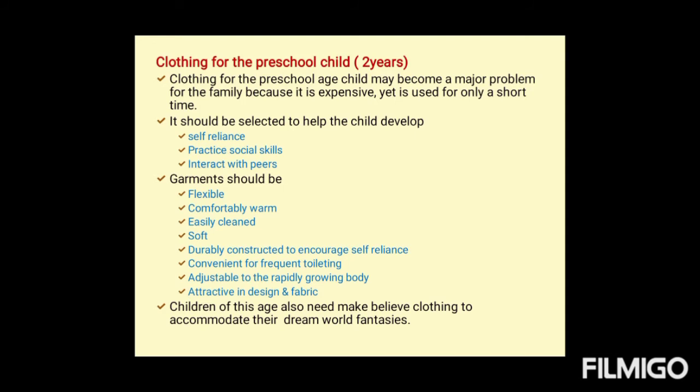Clothing for preschool children (2 to 6 years): clothing for preschool age children may become a major problem for the family because it is expensive and used for only a short period. It should be selected to help the child develop self-reliance, practice social skills, and interact with peers. Garments should be flexible, comfortably warm, easily cleaned, soft in nature, durably constructed, convenient for frequent toileting, adjustable to the rapidly growing body, and attractive in design. Children of this age also need make-believe clothing to accommodate their world of fantasies.